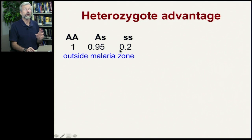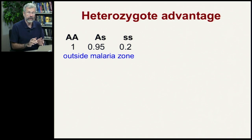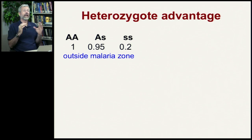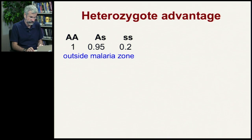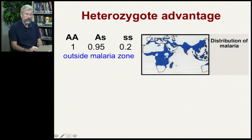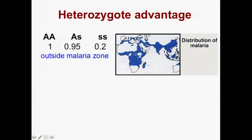This turns out to be true only in certain parts of the world — specifically where there's no malaria. Malaria is a plague of mankind, found in all the tropical regions of Asia, Africa, and Latin America. If we look at the distribution of malaria in the old world, it's in areas with lots of rainfall and climate suitable for mosquitoes to breed. This area sets up a different selection regime for the sickle cell trait.